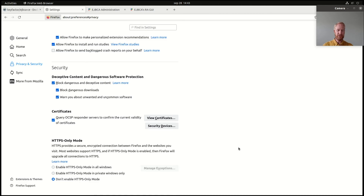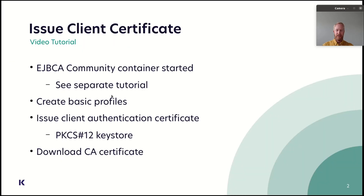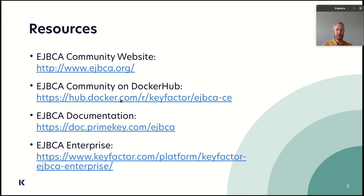So now I have issued a client certificate, downloaded the CA certificate, and installed the client certificate in my web browser — that's all there is to it. There are lots of resources online: the EJBCA community website at ejbca.org, the EJBCA community on Docker Hub which is the container I was running for this demo, lots of documentation at doc.primek.com, and if you need enterprise support, SLA, and additional functionality, there is an enterprise version of EJBCA at Keyfactor. Thank you for watching.